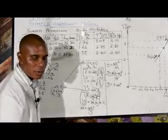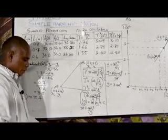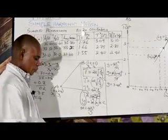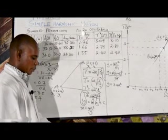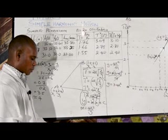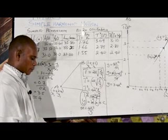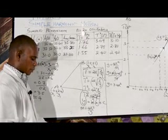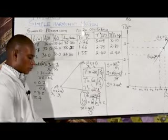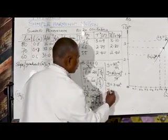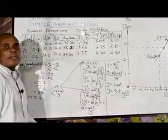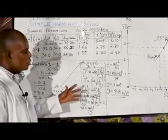We already found our M. So G = 4 × 3.142² divided by 4. This 4 will cancel, so G = 3.142². If you punch that on your calculator, you'll get 9.8.